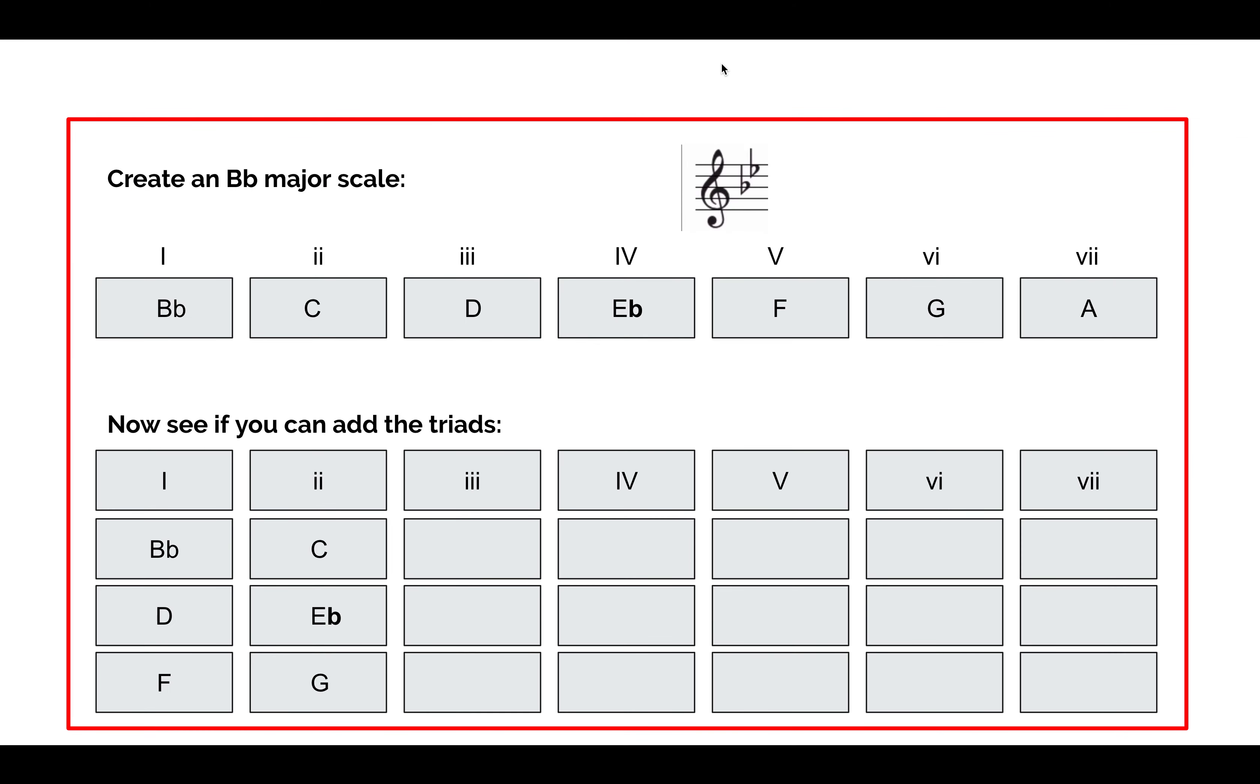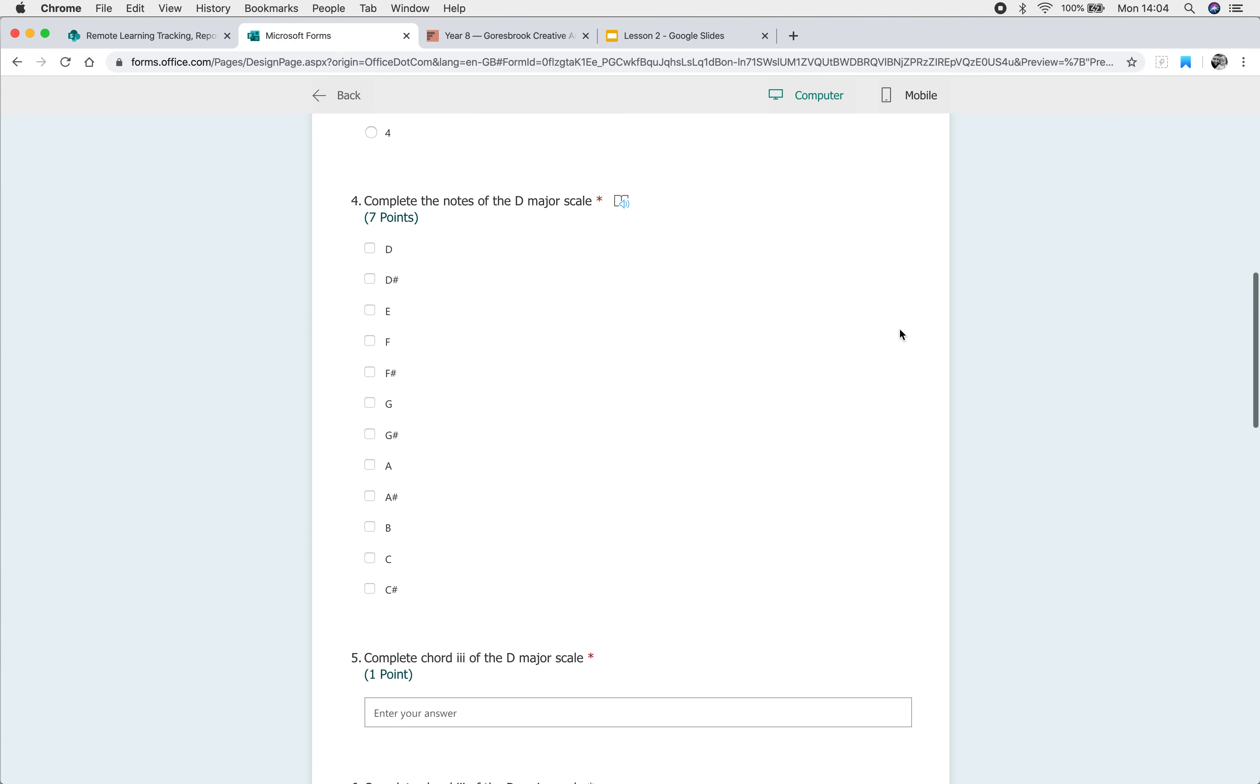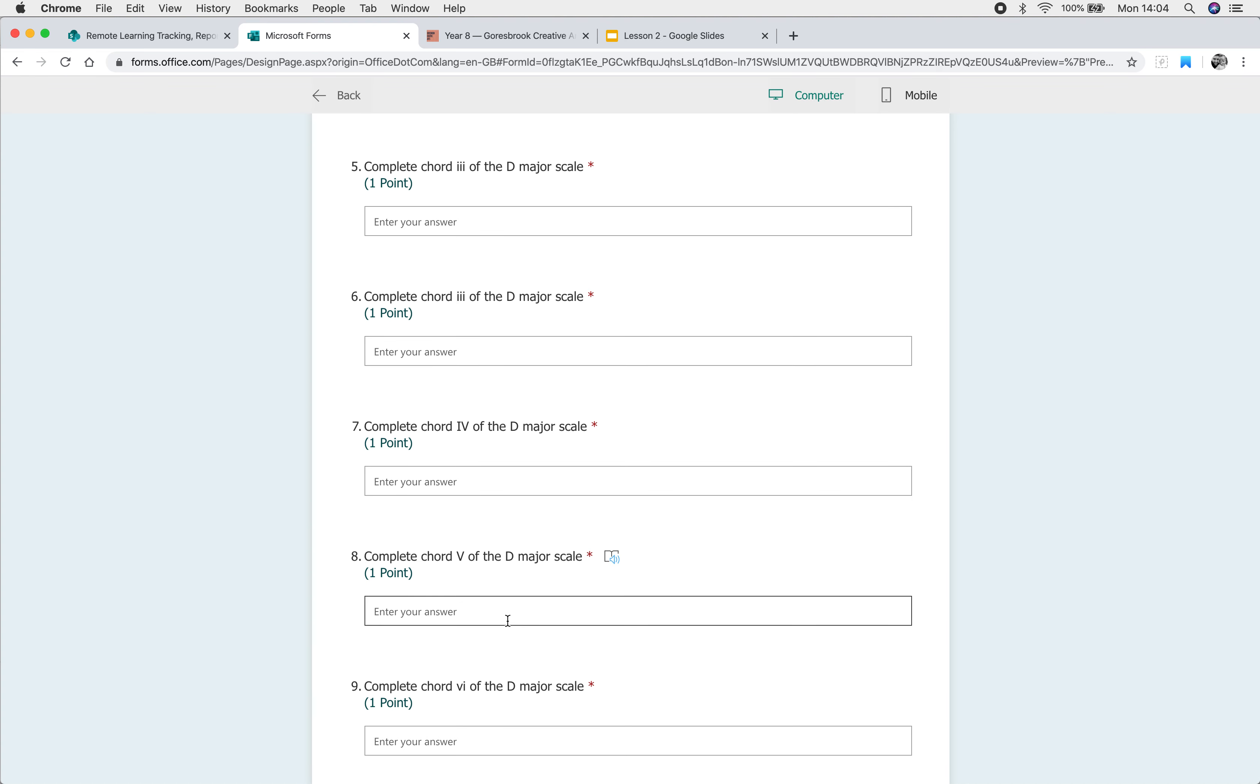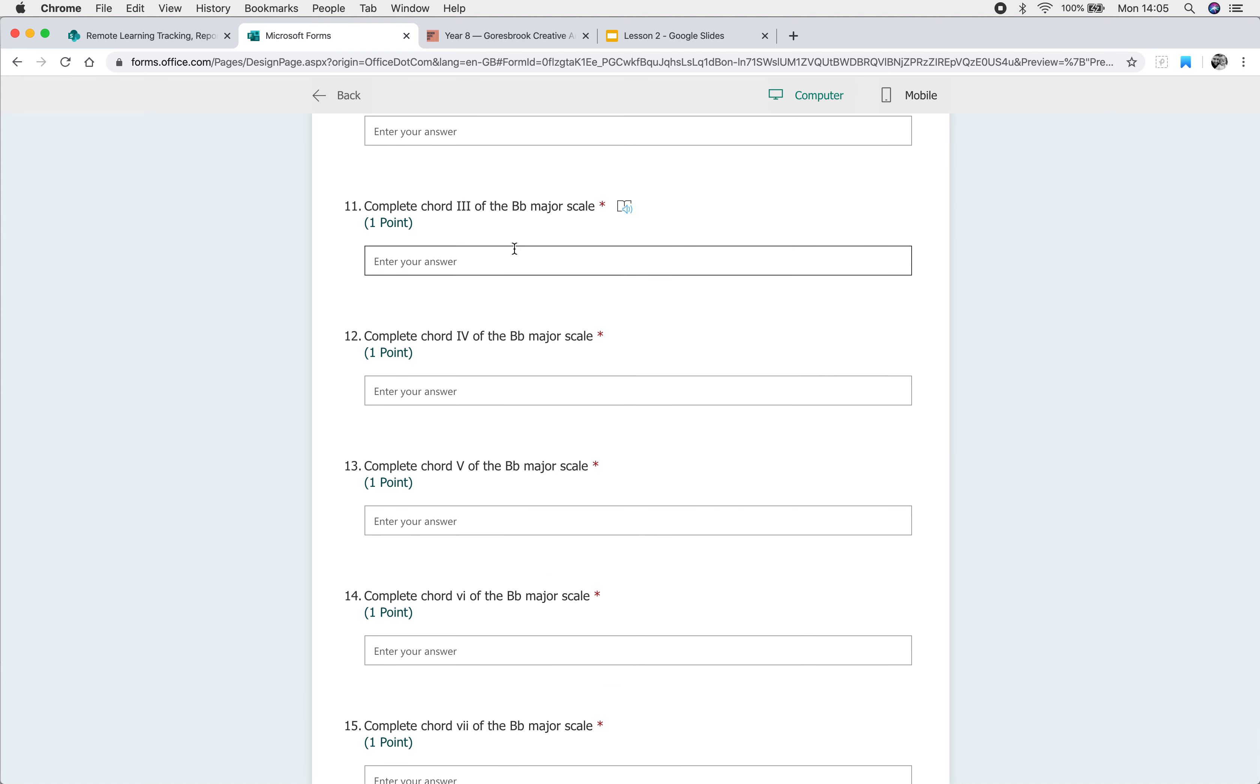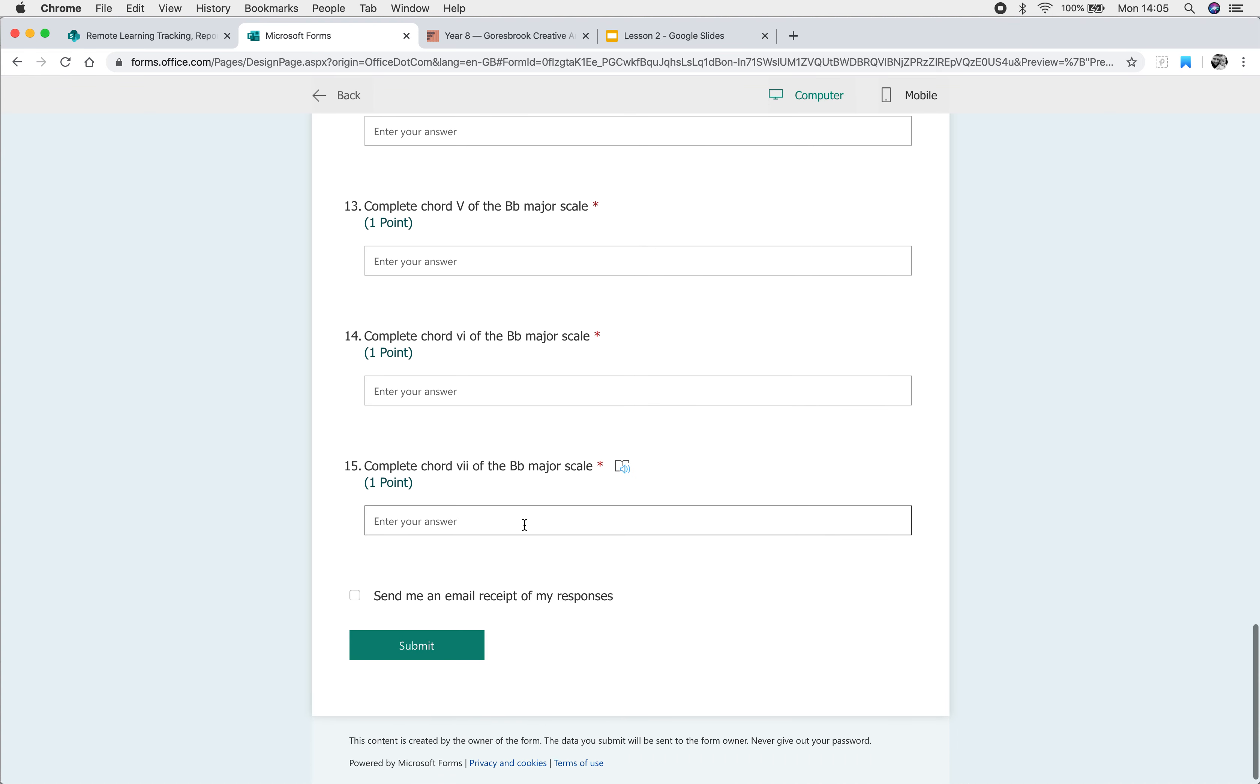Remember, ladies and gents, it should always be done on the Microsoft forms that you see in front of you. So, here, I want chord III of D major. You need to put the three notes in there. Three notes for chord IV, for chord V, for chord VI, and for chord VII. The same will happen for B-flat major: chord III, chord IV, chord V, chord VI, and chord VII.